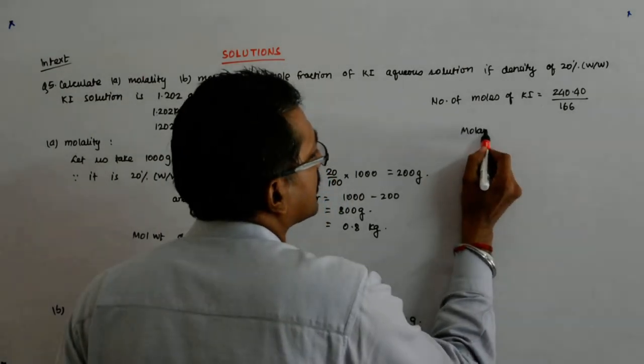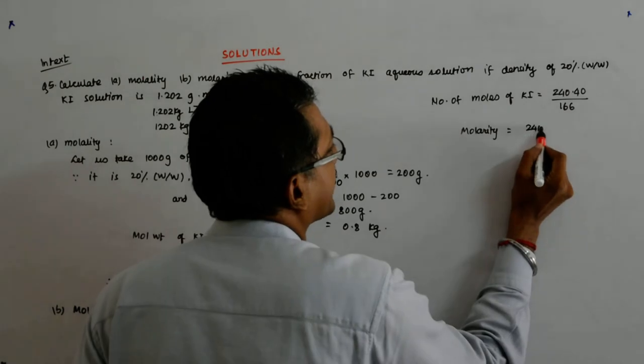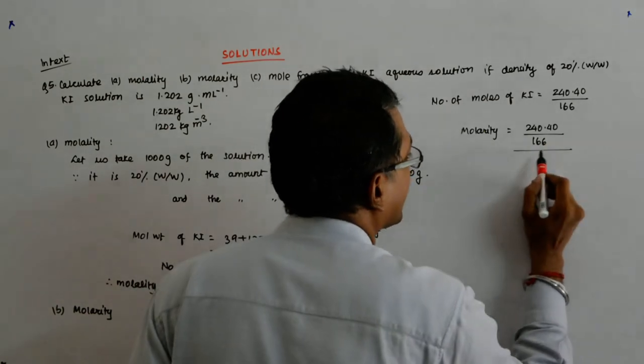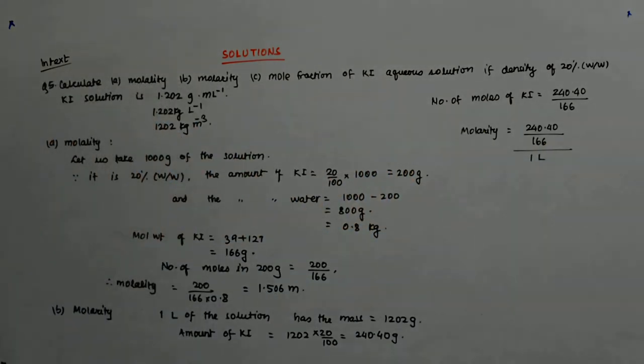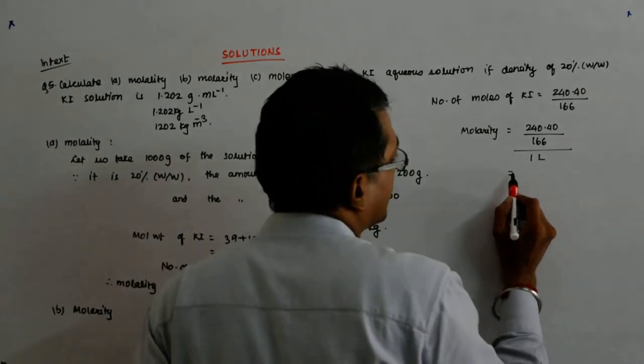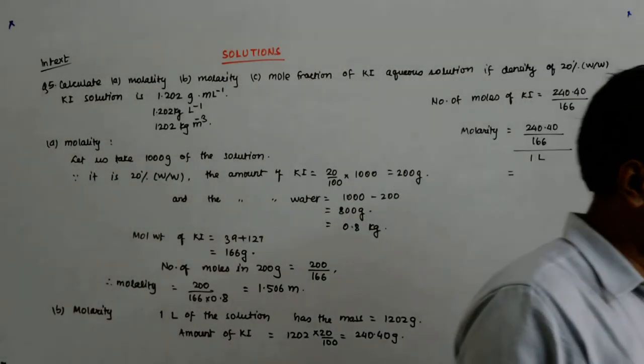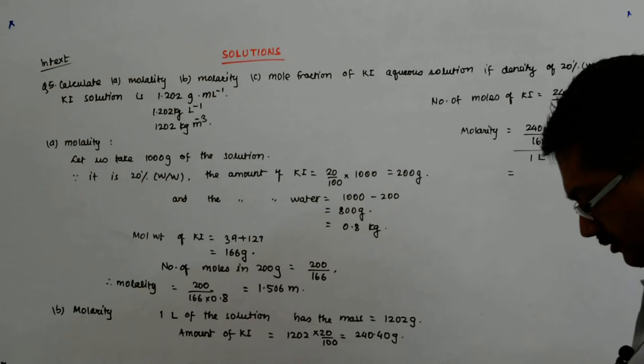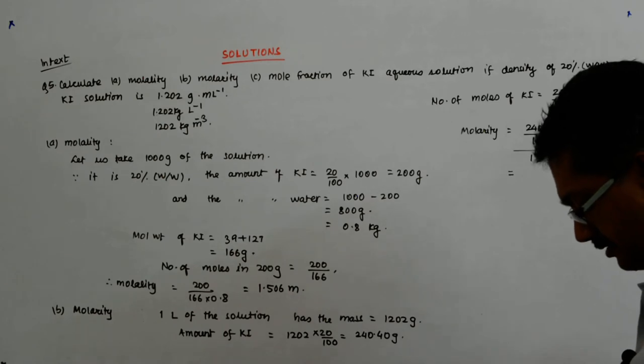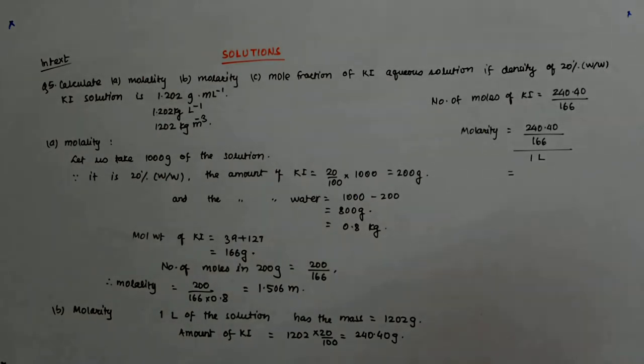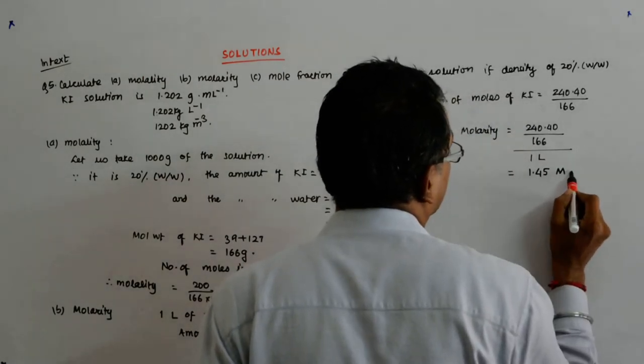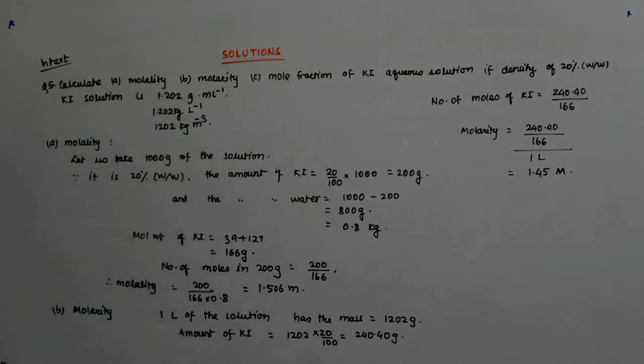So molarity is equal to 240.40 divided by 166 divided by 1 liter. So it is 240.4 divided by 166, that straightaway gives you 1.448, so that is maybe 1.45 molar. In 1 liter I have so many moles.